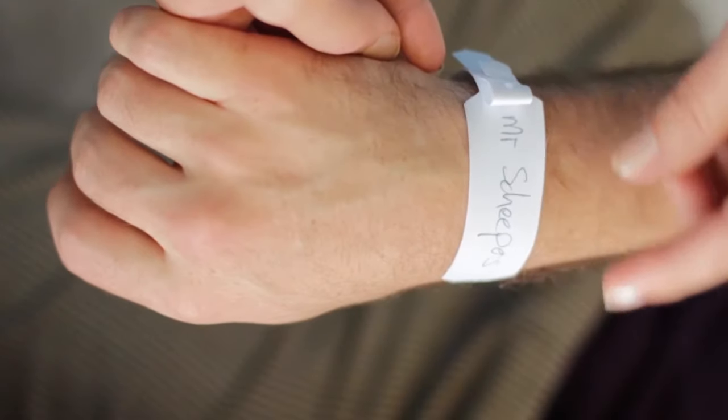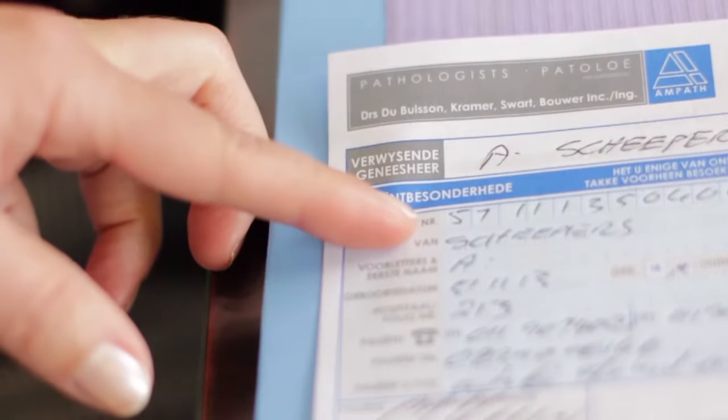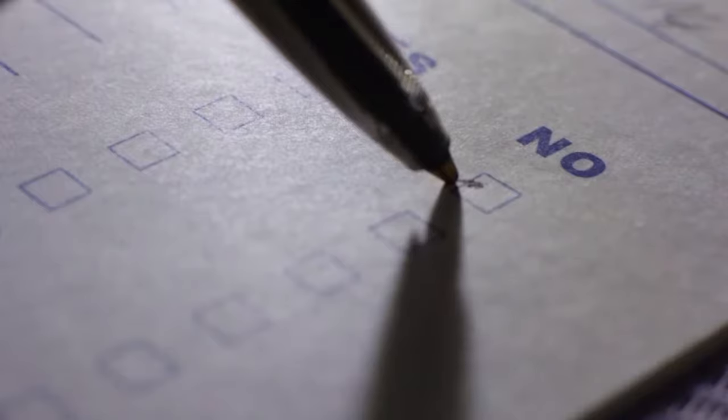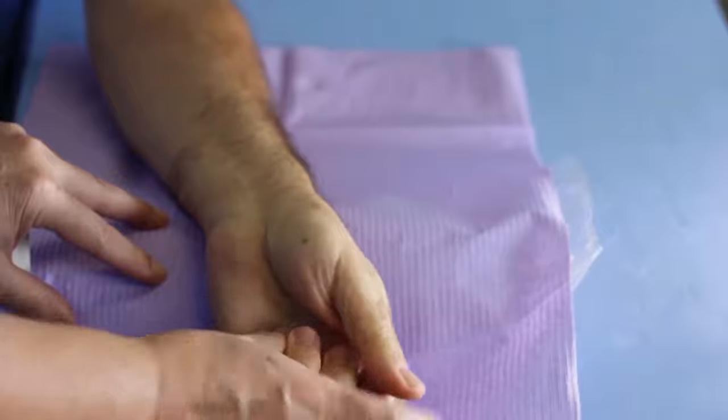Before starting this phlebotomy procedure, first, greet the patient and introduce yourself. Pause to confirm that you have positively identified the correct patient and that you are performing the correct procedure. Second, ask the patient questions regarding possible allergies, bleeding disorders, and ensure that your patient is in a comfortable and suitable position for the procedure.